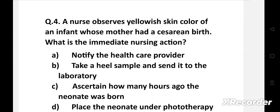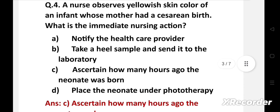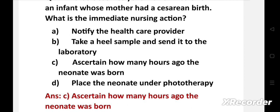A nurse observes yellowish skin color of an infant whose mother had a cesarean birth. What is the immediate nursing action? Option A notify the healthcare provider, B take a heel sample and send it to the laboratory, C ascertain how many hours ago the neonate was born, D place the neonate under phototherapy. Right answer is option C, ascertain how many hours ago the neonate was born. At first we have to check the date of birth of the neonate for finding out whether it is physiological or pathological jaundice.